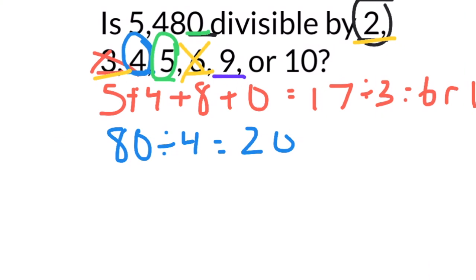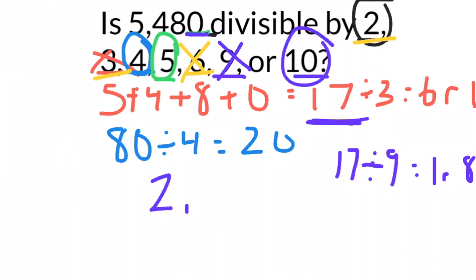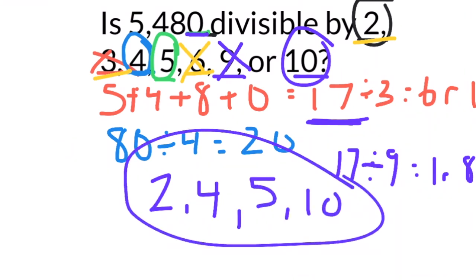Let's check nine. Add all the digits — we already found that sum is 17. Since 17 can't be divided by nine evenly (17 divided by nine is one remainder eight), nine does not go into 5,480. Last one: is it divisible by ten? It ends in zero, so it is divisible by ten. So 5,480 is divisible by two, four, five, and ten.